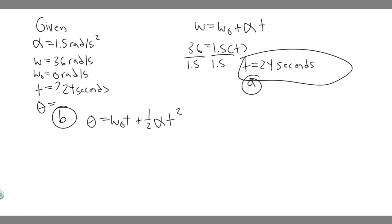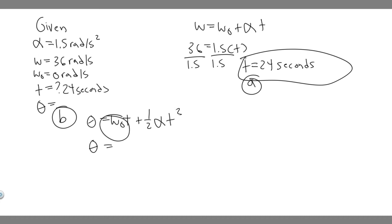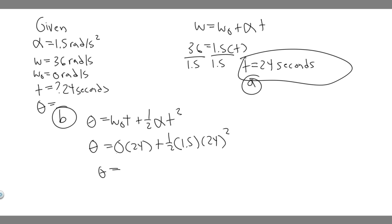Plugging in: omega 0 is 0, t is 24, and alpha is 1.5. So theta equals 0 times 24 plus one-half times 1.5 times 24 squared. The first term cancels, leaving 0.5 times 1.5 times 576, which gives theta equals 432 radians.